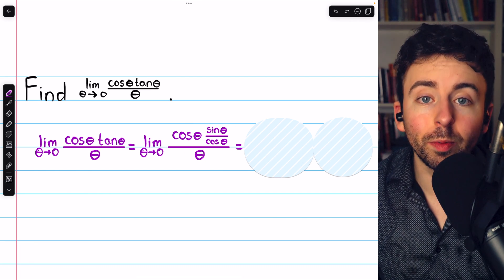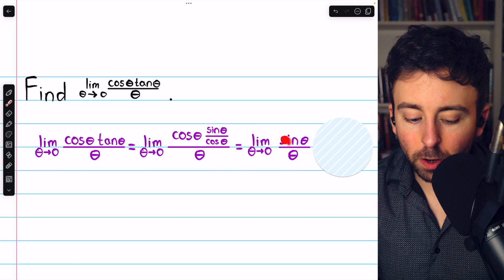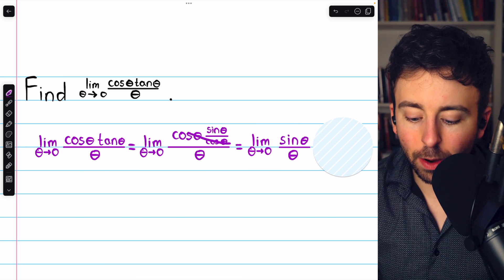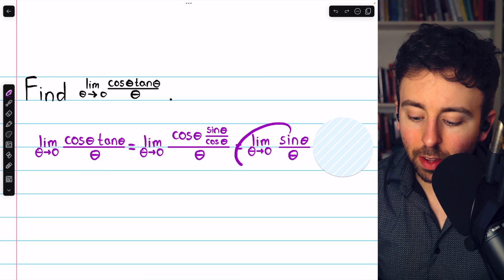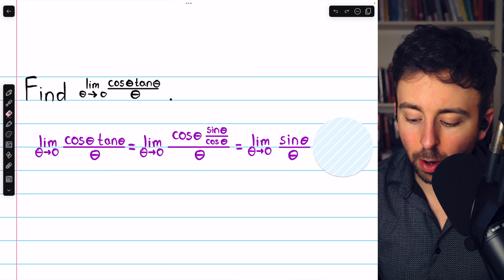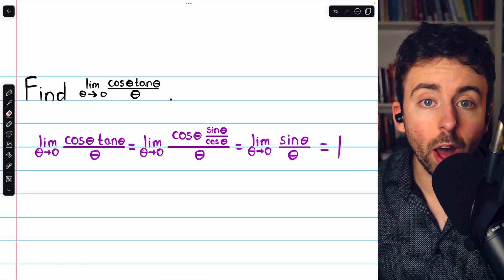which is a limit you hopefully know. So we get here. Again, the cosines canceled out and then we're just left with sine theta over theta. But the limit of sine theta over theta as theta approaches zero is known to be one.